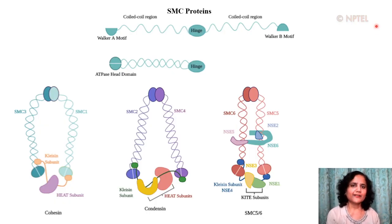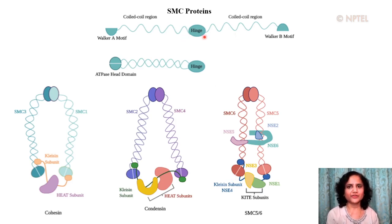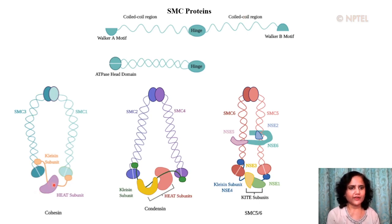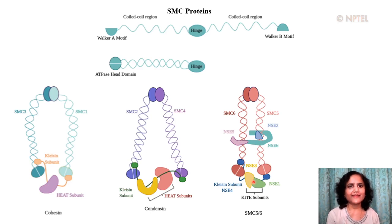Shown here are three conserved SMC complexes in eukaryotes: the cohesin complex, the condensin complex, and the SMC5-6 complex. A cartoon of the SMC monomer is shown at the top — it folds and associates with another SMC at the hinge. Each SMC complex has two different SMC proteins forming a heterodimer and additional non-SMC subunits. Cohesin has two main non-SMC subunits, condensin has three, whereas the SMC5-6 complex has six non-SMC subunits.